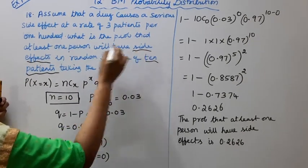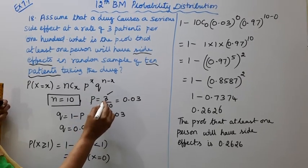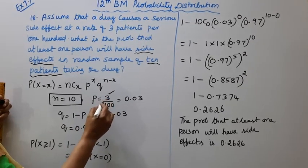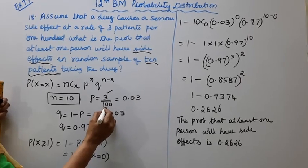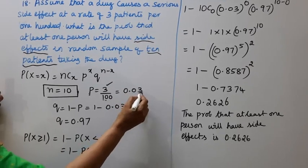If we go to p, p is equal to 3 percent side effect by the total patients 100. 3 by 100. If we go to answer, 0.03.